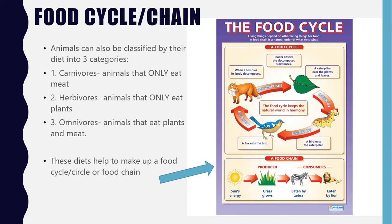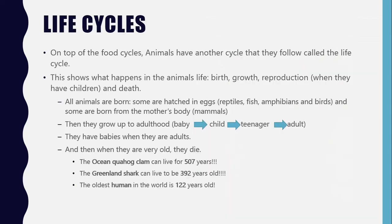So that is the food cycle, but there's another cycle that animals have, and that is called the life cycle. What happens in the life cycle is basically just what happens in the animal's life — they give birth, they grow, they reproduce, and then they die when they're old. All animals are born: some are hatched in eggs, like reptiles, fish, amphibians, and birds, and some are born from the mum — they come straight from the mum's body — and that's mammals. Then they grow up to adulthood, starting as babies, then children, then teenagers, then adults, and when they're adults they have babies.